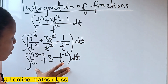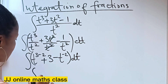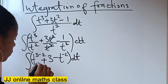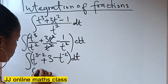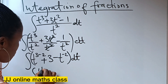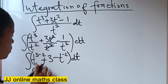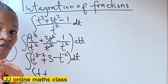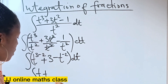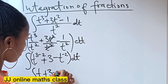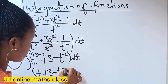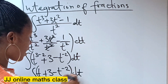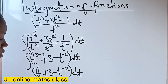Now this is fully simplified. So this is the same thing as the integral of: 3 minus 2 gives us 1, so t to the power of 1, which is still t. Therefore we have t plus 3, minus t to the power of minus 2, all dt. Now this is what we'll be solving.